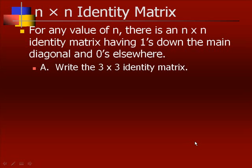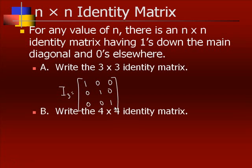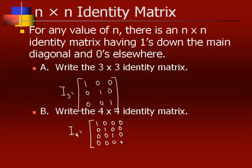Write the 3 by 3 identity matrix, and write the 4 by 4 identity matrix. The 4 by 4 will have 4 rows and 4 columns, with 1's down the main diagonal and 0's elsewhere. The catch is you always want 1's down the diagonal and 0's everywhere else.